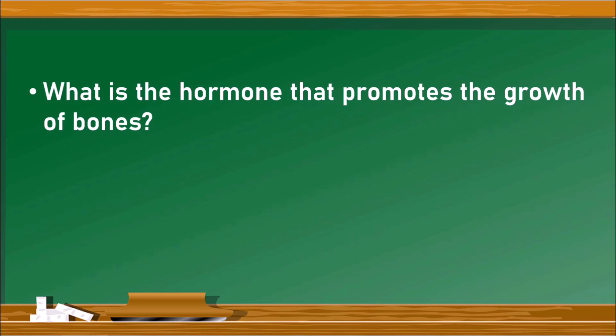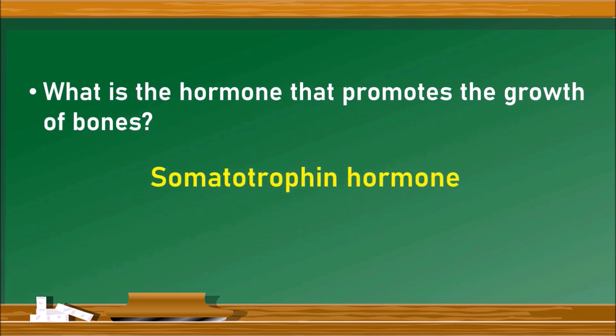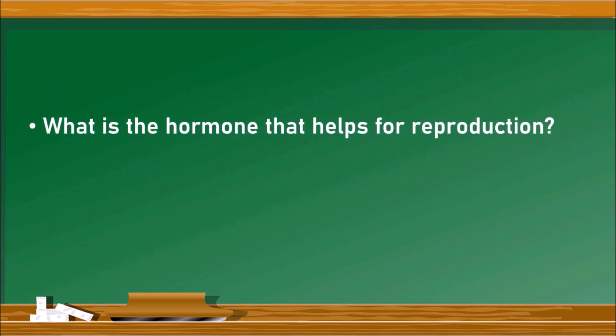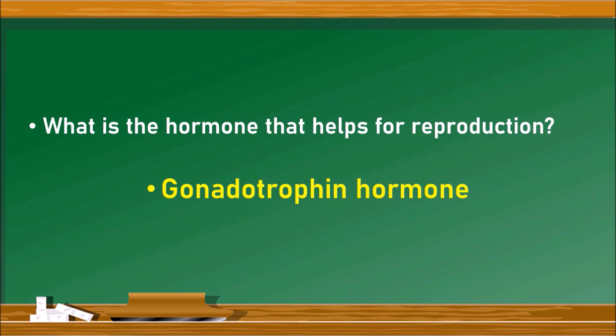What is the hormone that promotes the growth of bones? That is somatotrophin hormone. What is the hormone that helps for reproduction? The hormone gonadotrophin, because it promotes the activity of testes and ovaries. In this manner, questions may be asked: what is the hormone that promotes the activity of the thyroid gland? That is thyrotrophin.